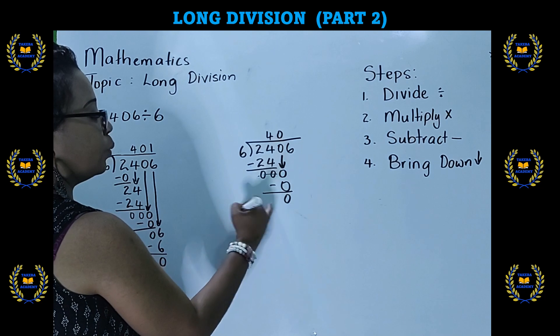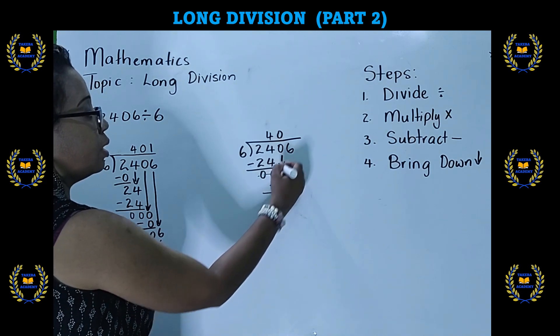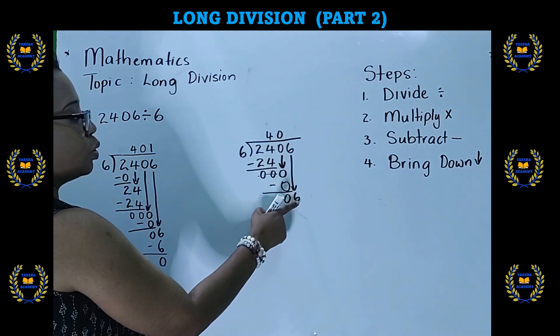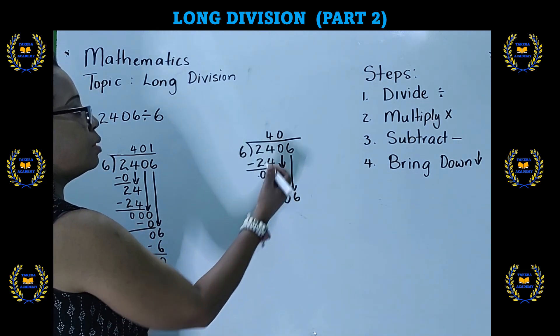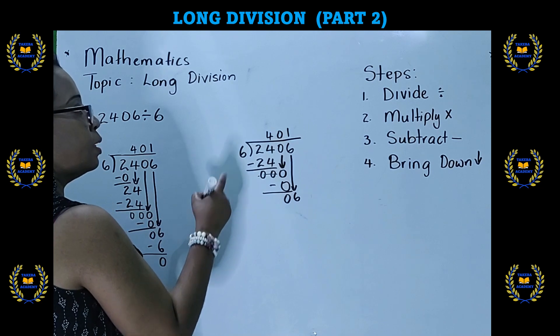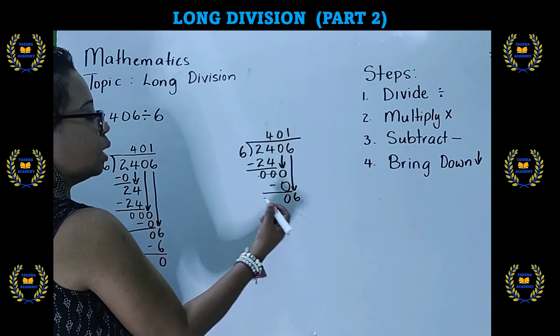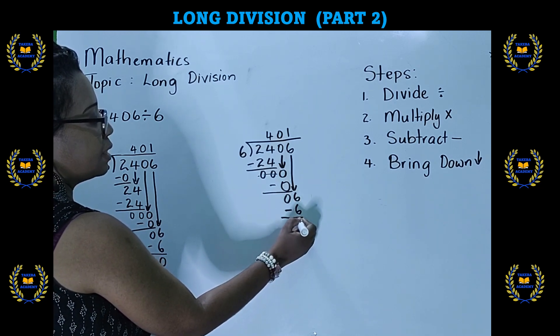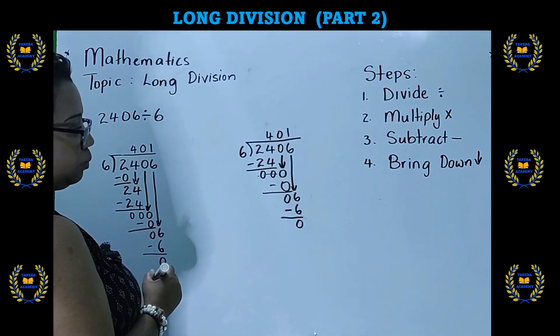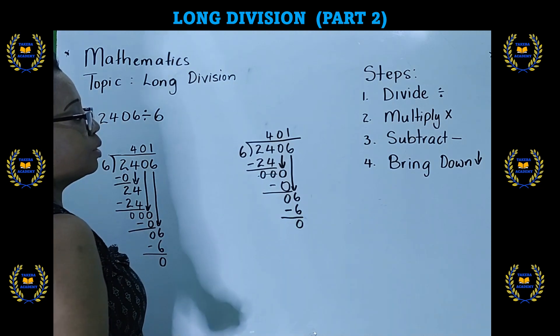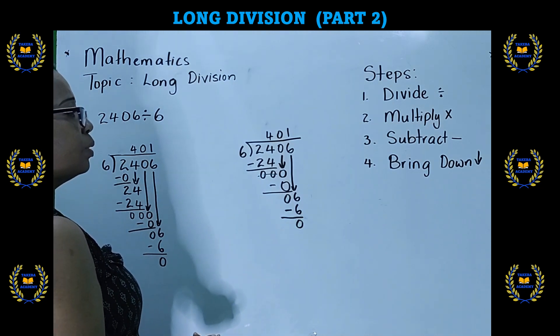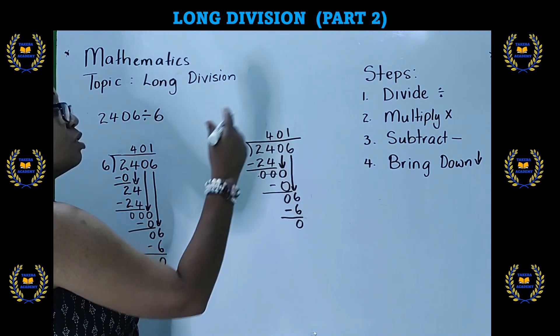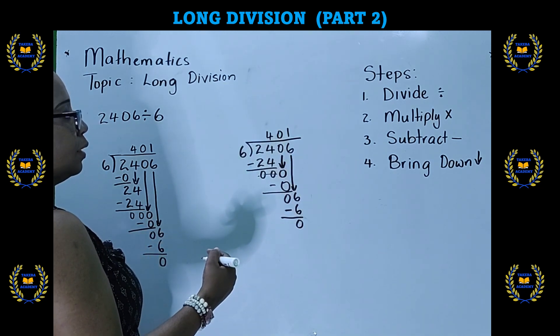So now, after we did our subtraction to step 3, we bring down the next number, which is step 4. So 6 divided by 6, that's 1. Second step, 6 times 1 is 6. Third step, we subtract. 6 take away 6 is 0. You look to see if there are any more numbers to bring down. There are no more numbers to bring down. That means our process is finished. Once we can't bring down any more numbers, then there's nothing for us to start again.